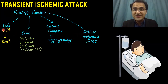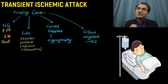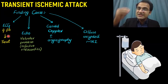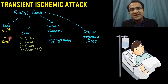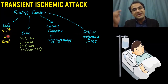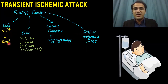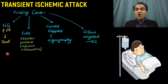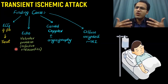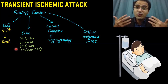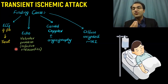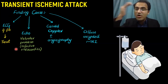On ECG, you are trying to find atrial fibrillation — any abnormal rhythm that can lead to clot formation and brain ischemia. A-fib is a condition in which clots form in the heart and get stuck in the brain; if found, you treat the a-fib. On echocardiography, you are looking for valvular problems and infective endocarditis that can lead to clot formation and ischemia of the brain.